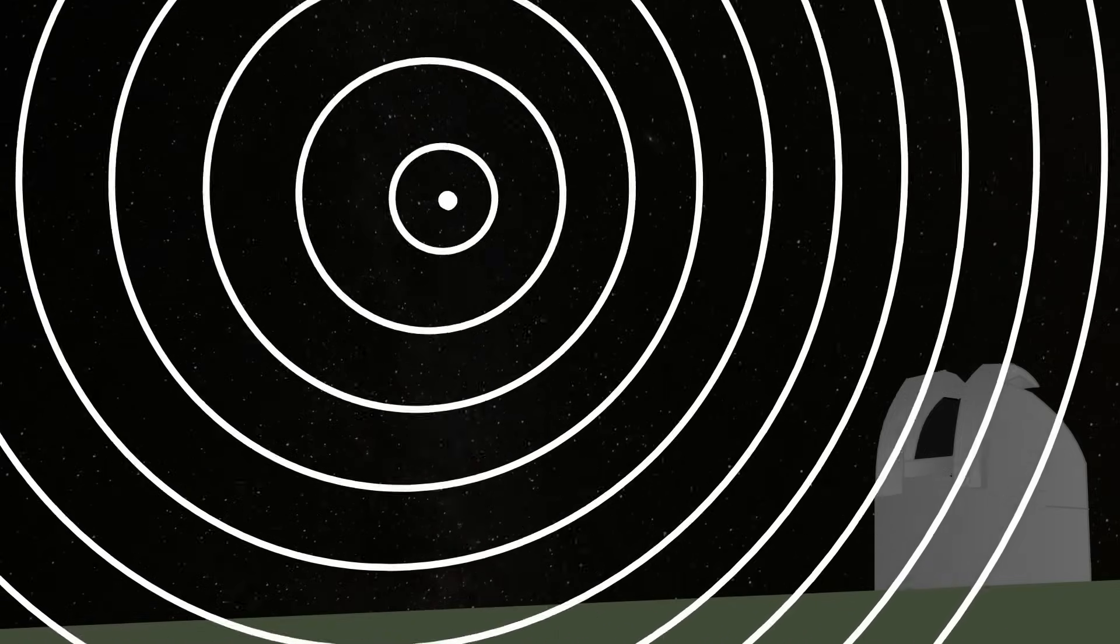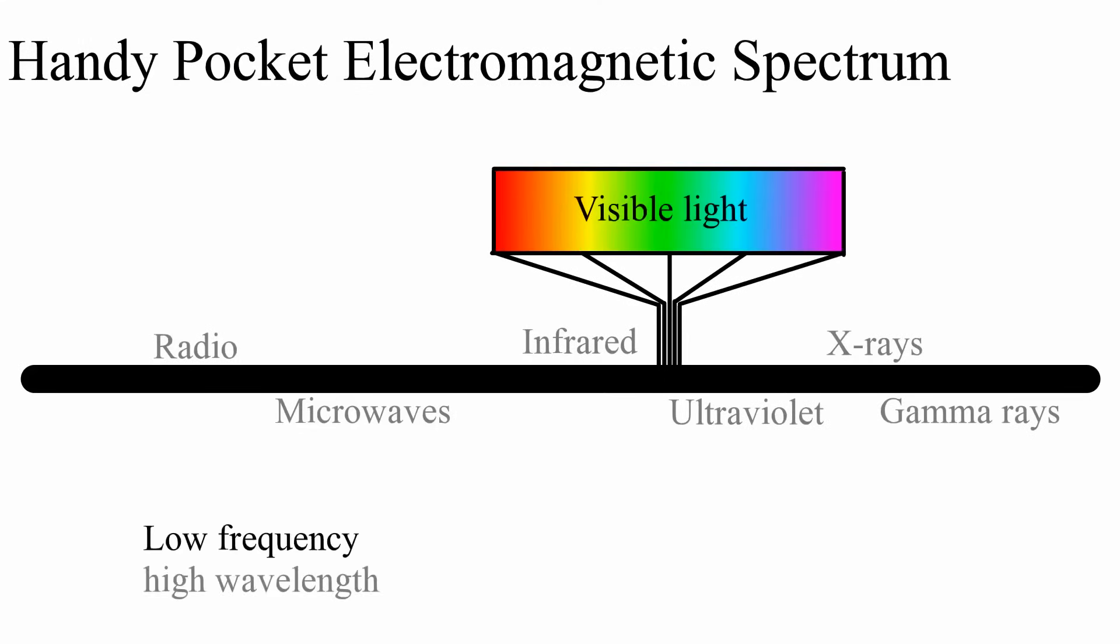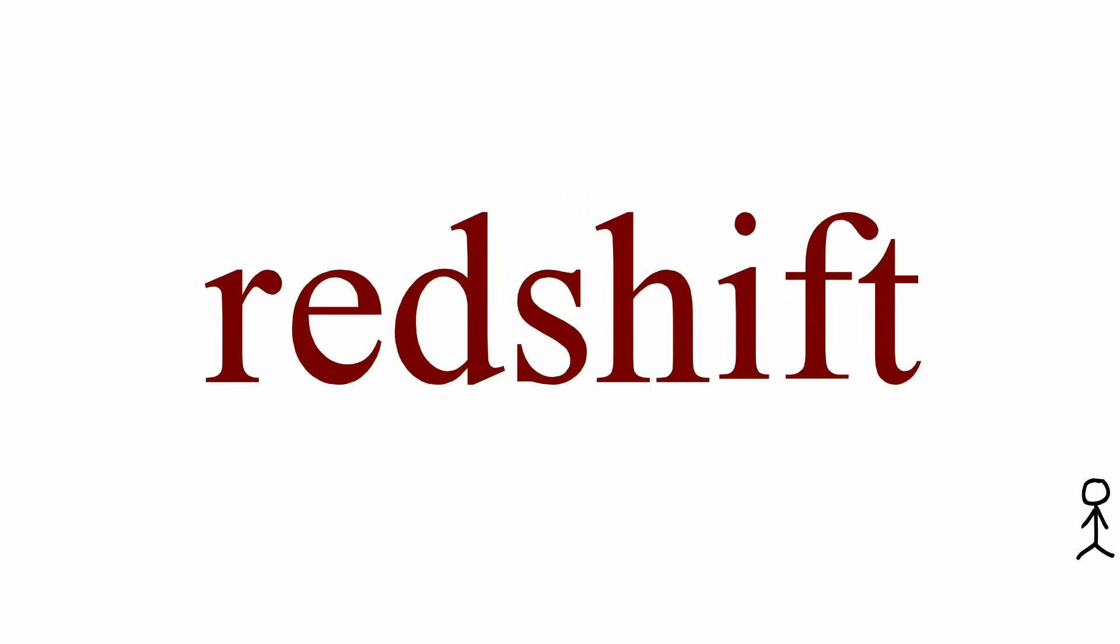Frequency in sound is pitch, so what does it mean for light? Well if we look at our handy pocket electromagnetic spectrum chart, we'll see that a small change in frequency for visible light will change its colour. Higher frequency light waves means bluer light, and lower frequency light waves means redder light. This is called redshift, and it may possibly be among the weirdest and coolest things of all time.